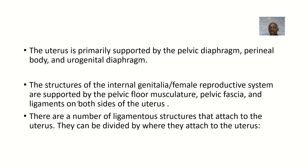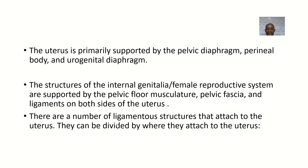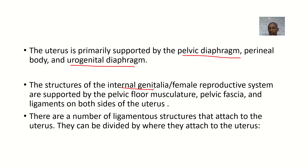The uterus is primarily supported by the pelvic diaphragm, the perineal body, and the urogenital diaphragm. Structures of the internal genitalia — the female reproductive system — are supported by the pelvic floor musculature, pelvic fascia, and ligaments on both sides of the uterus.